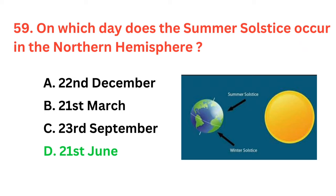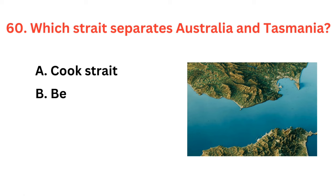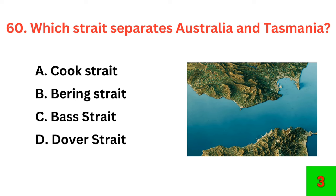Which strait separates Australia and Tasmania? The correct answer is option C: Bass Strait.